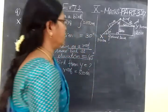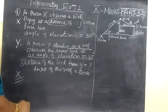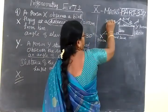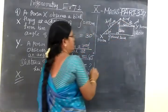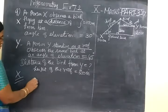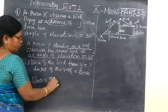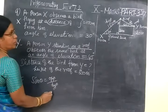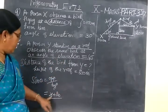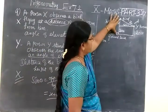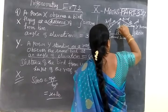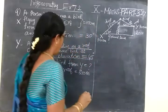Now consider the right angle triangle for S. The angle of elevation is 30 degrees. Here hypotenuse is 100 meters and the opposite side is S plus 20. Opposite side and hypotenuse refers to sin theta. So sin 30 equals opposite by hypotenuse, that is (S + 20) / 100. Sin 30 is one half. Cross multiply: S plus 20 equals 50.